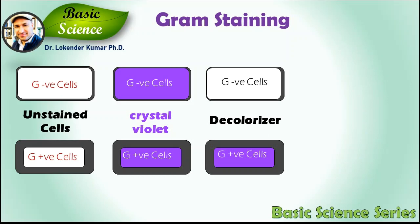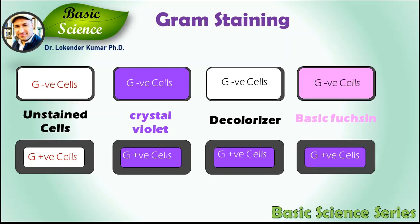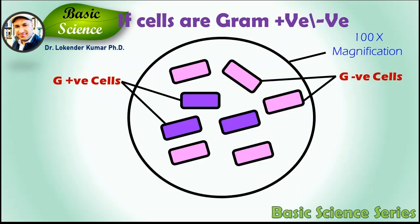Further, the smear is stained with a counter stain, which is fuchsin or safranin. Gram-negative cells appear pink because they get counter stained. If you look at a smear with both gram-positive and gram-negative cells in it, the smear will look like this after staining: gram-positive cells will appear purple and gram-negative cells will appear pink. We can then make an initial diagnosis that our sample contains either gram-positive, gram-negative, or both kinds of cells.